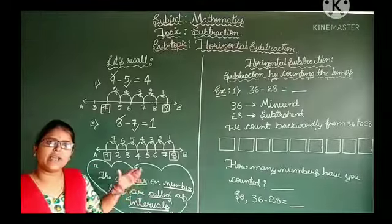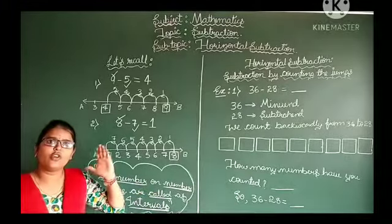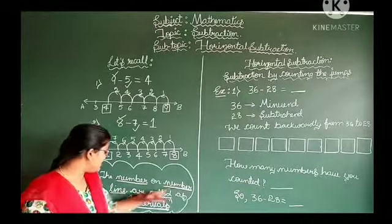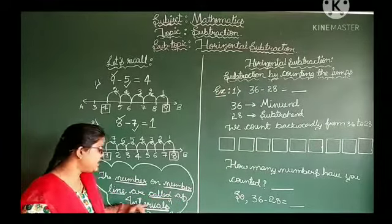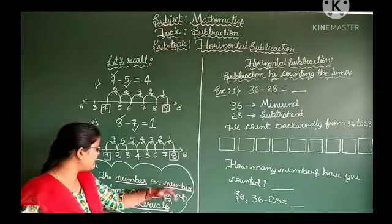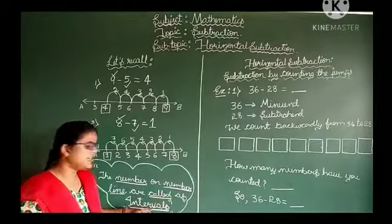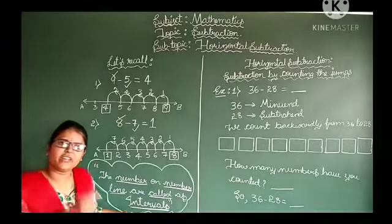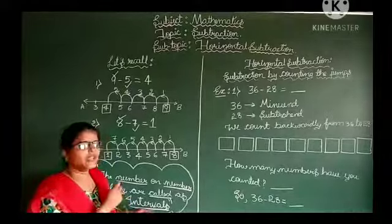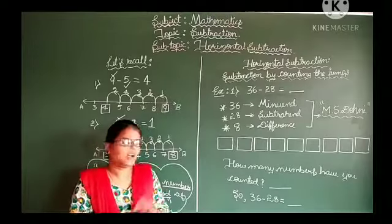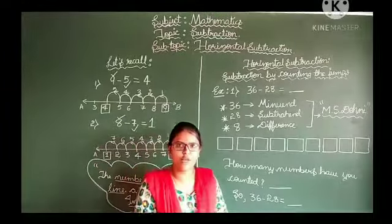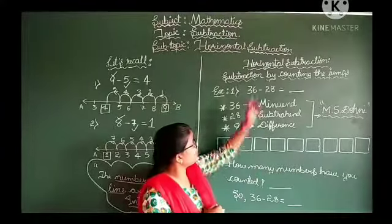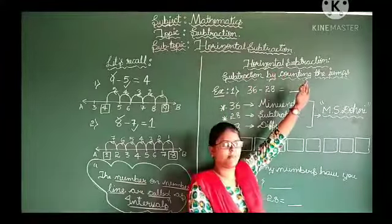Remember this important point: the numbers on the number line are called intervals. This is a very, very important point. Until now we have recalled our previous class. In today's class, we are going to discuss about horizontal subtraction.